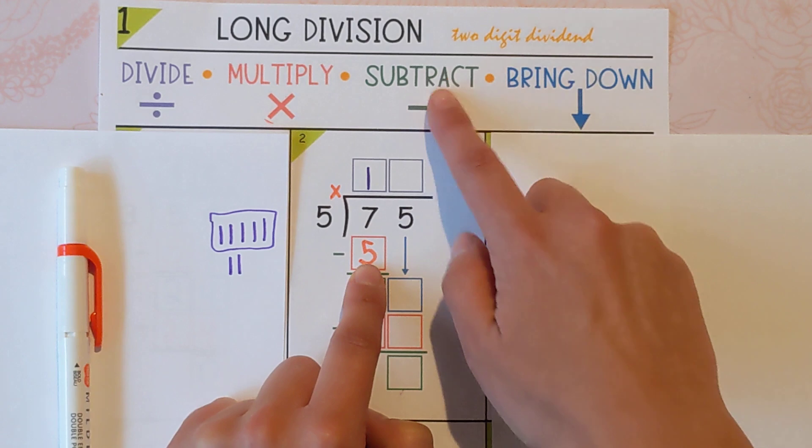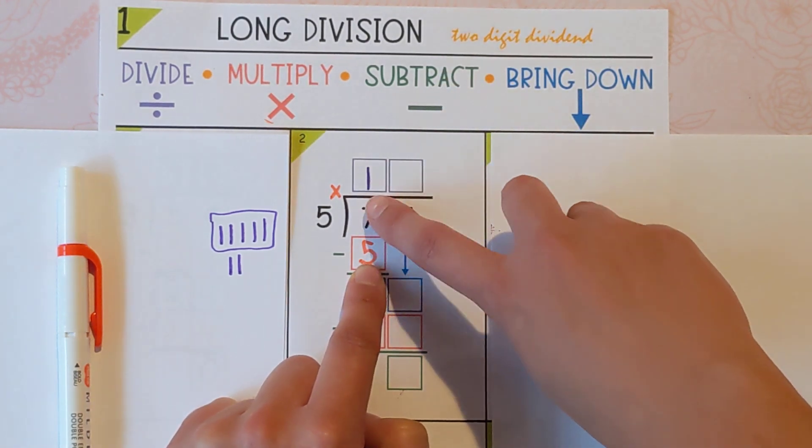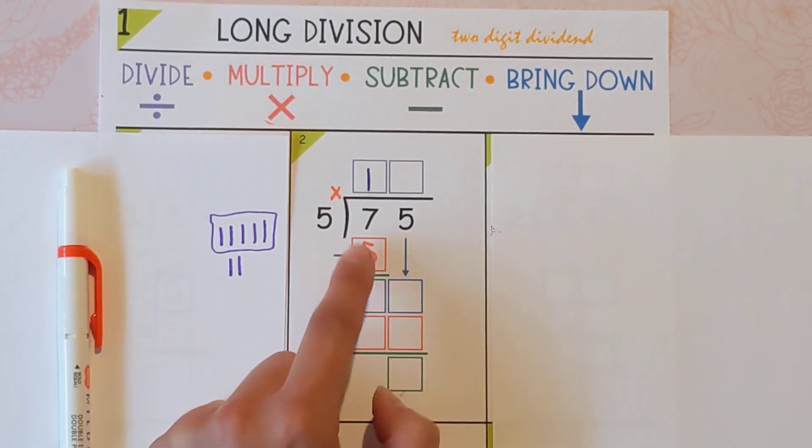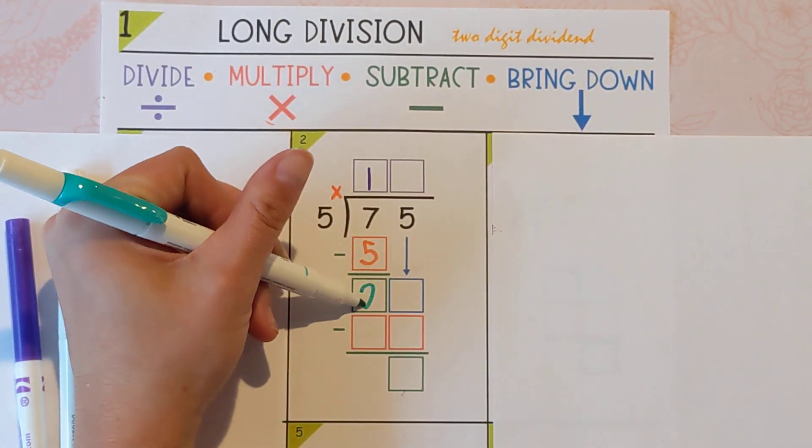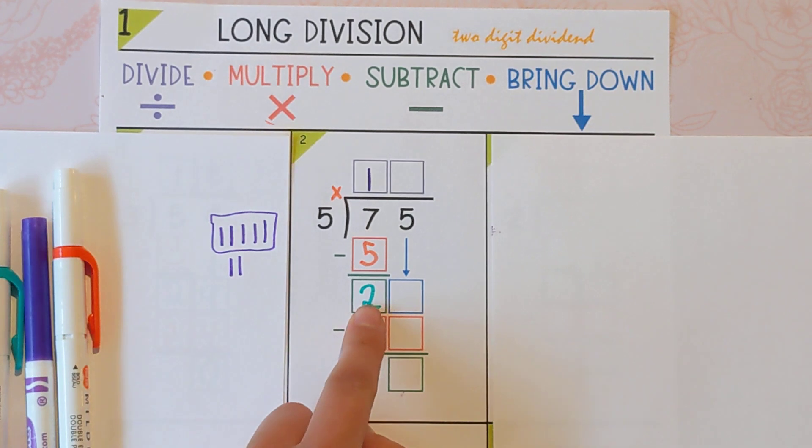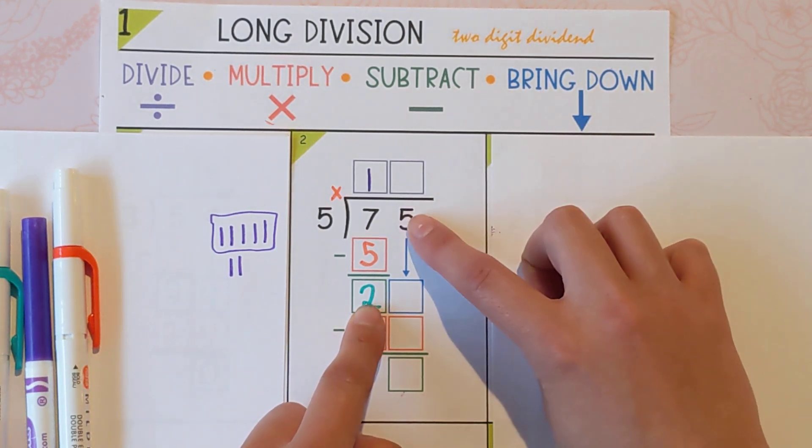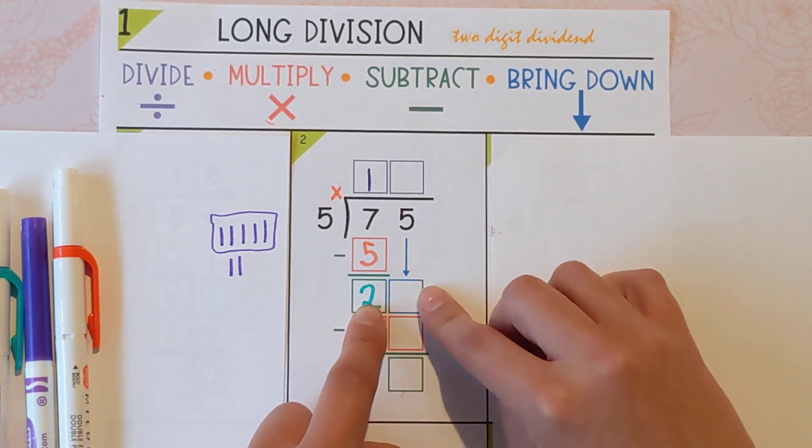Now we'll do the green. So again, the last thing I touched is this 5. So we're subtracting 7 minus 5, which is 2. The next step is to bring down, and there's only one thing left to bring down here, which is the 5.